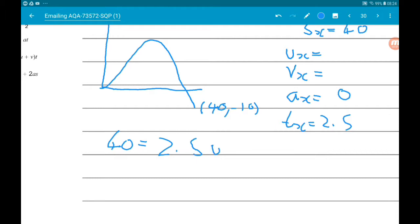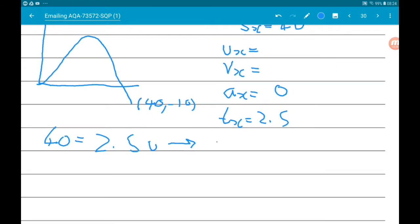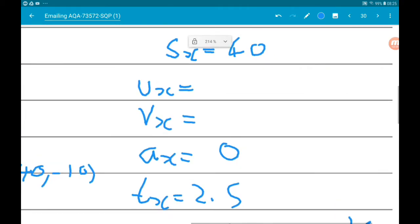Using this equation, we know that s equals 40, which equals u times t, so 2.5u, and then the next term has acceleration involved. Acceleration here is zero, so that term just disappears. This tells us that our initial velocity horizontally is 40 over 2.5, which gives us 16. So we now know the initial velocity horizontally.